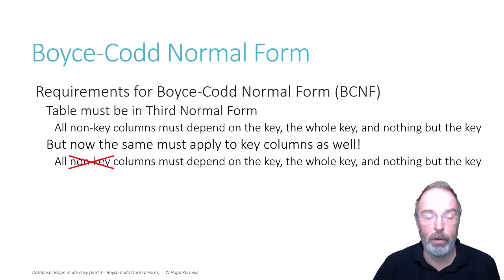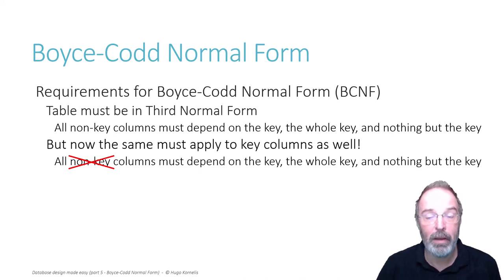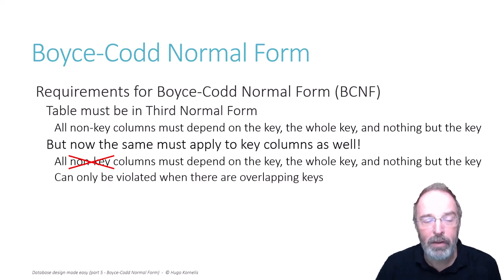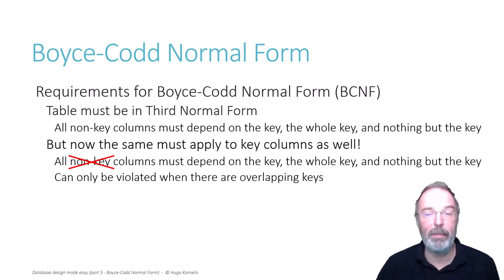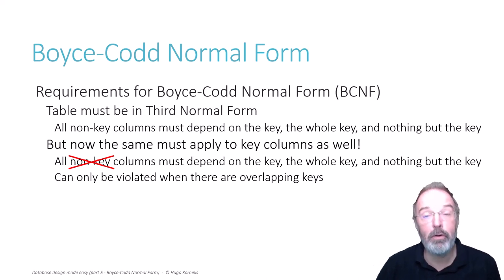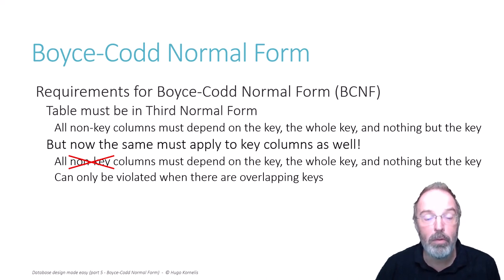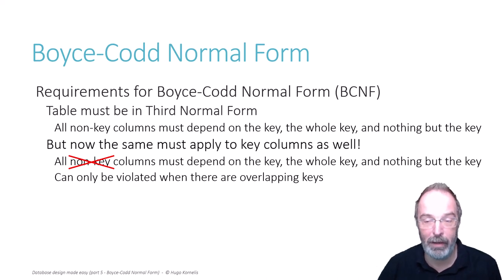So now all the columns must depend on the key, the whole key, and nothing but the key. It is important to note that Boyce-Codd Normal Form violations can only occur in tables that have at least one overlapping key. If there are no overlapping keys, then a table in 3rd Normal Form is Boyce-Codd Normal Form by definition. Only when there are overlapping keys do you need to check for BCNF violations.